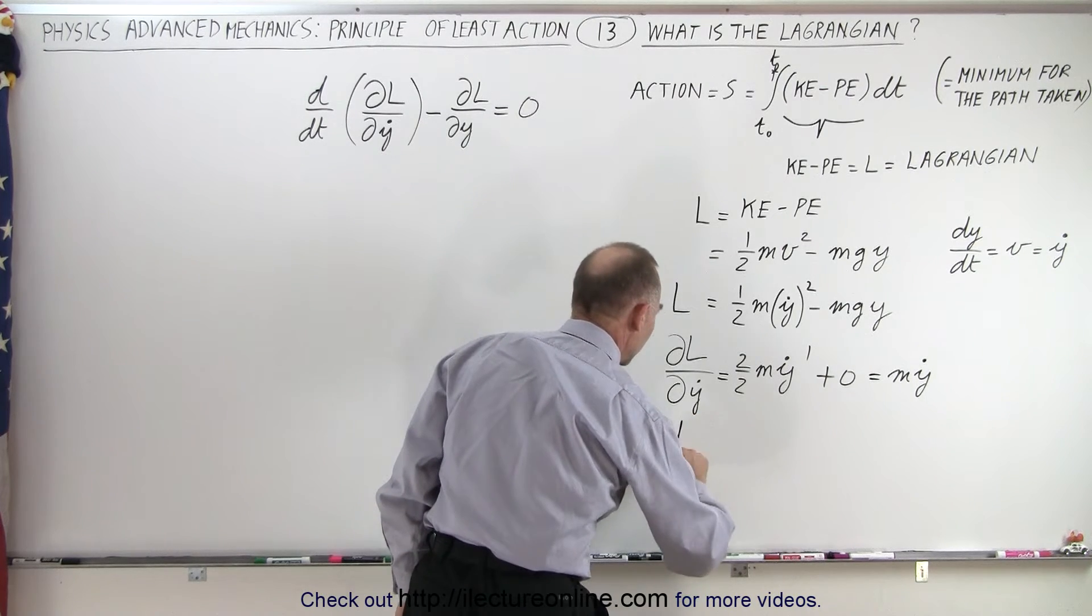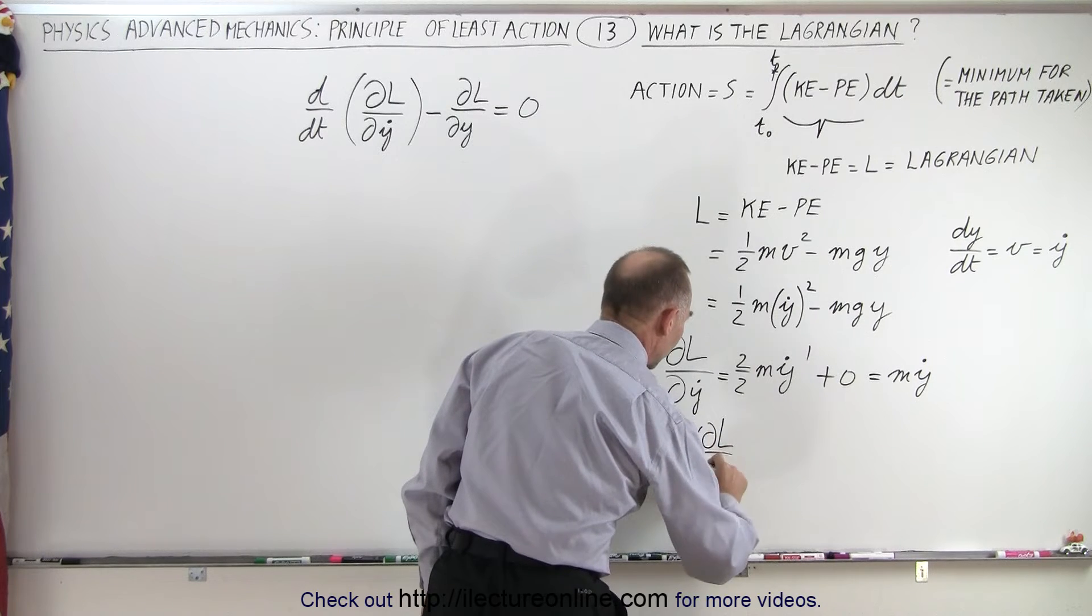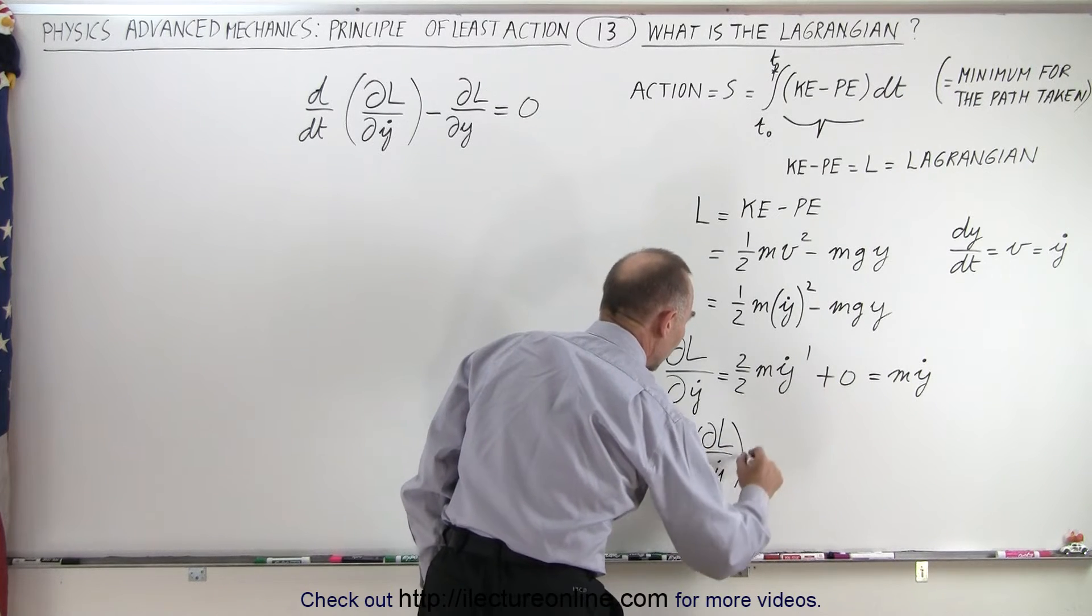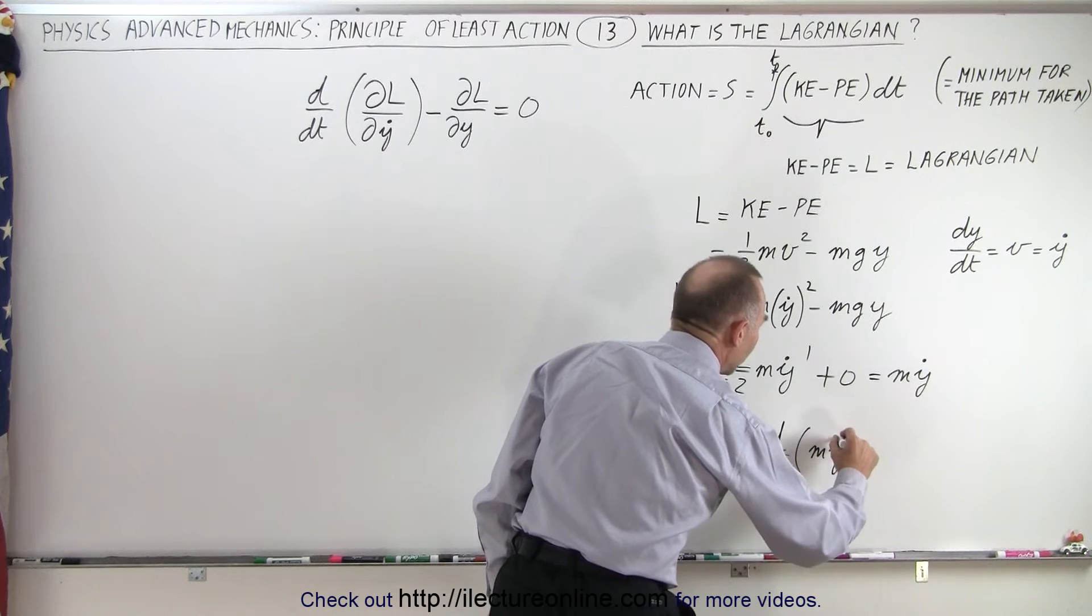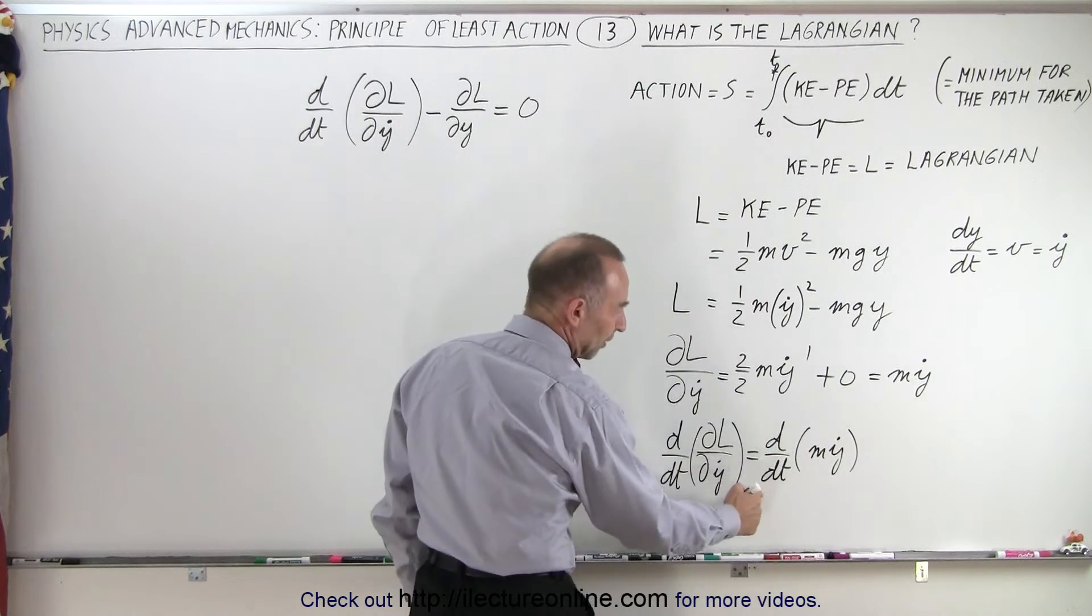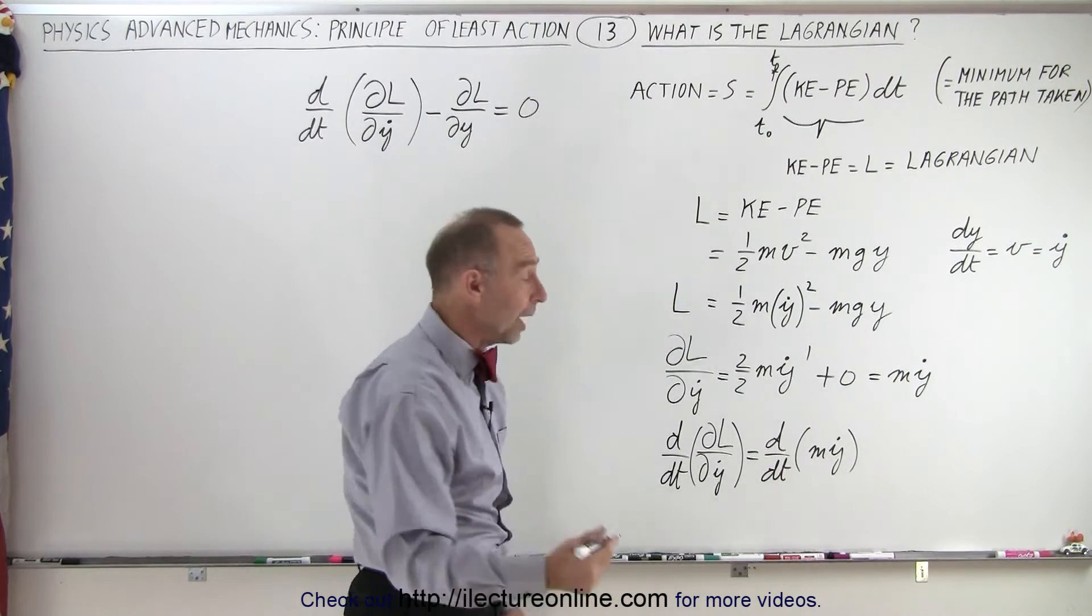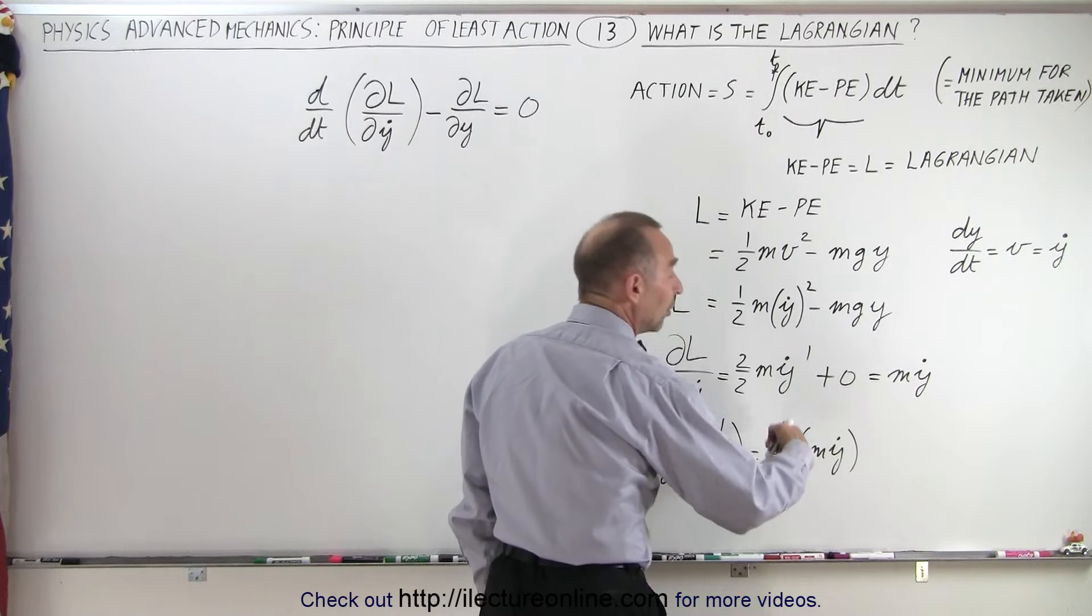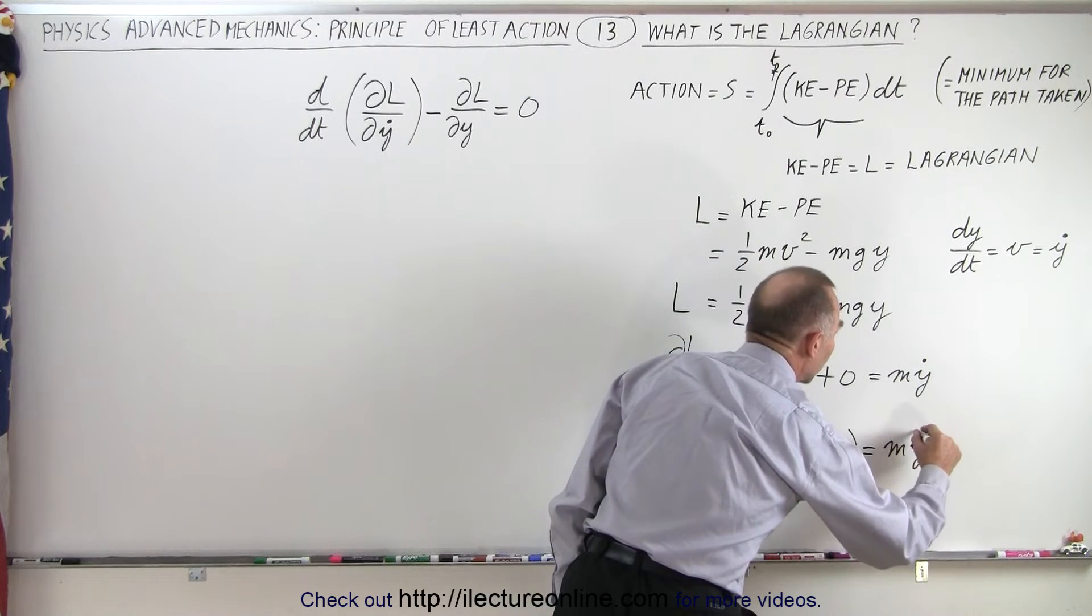of the partial of L with respect to y dot, which is equal to the d dt of m y dot, and of course if you take the derivative with respect to time of y dot, you get y double dot. This is the velocity, y double dot will be the acceleration, so this is equal to m y double dot.